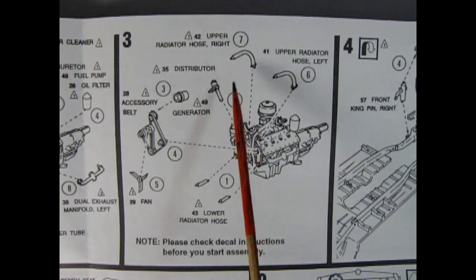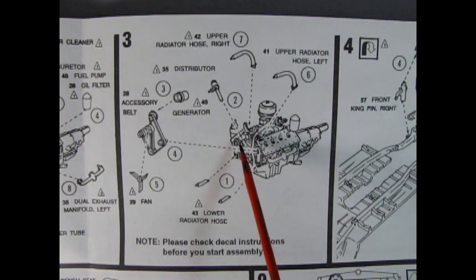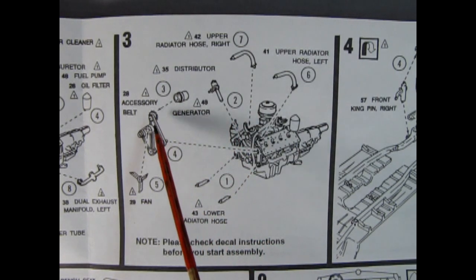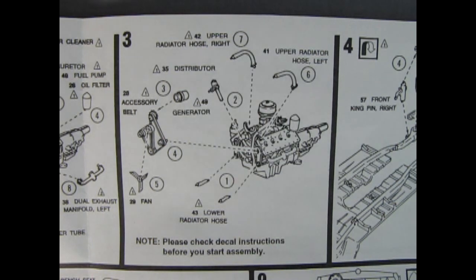Panel three shows our upper radiator hoses going on. Then we've got the special distributor dropping in place. We've got our generator and our accessory belt, our fan and the lower radiator hoses. It also says please check decal instructions before you start assembly. So there's a lot of little decals on here that'll make this thing look really great.